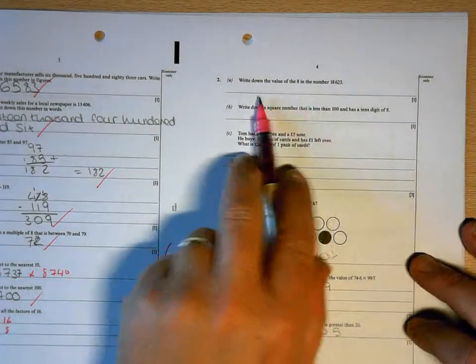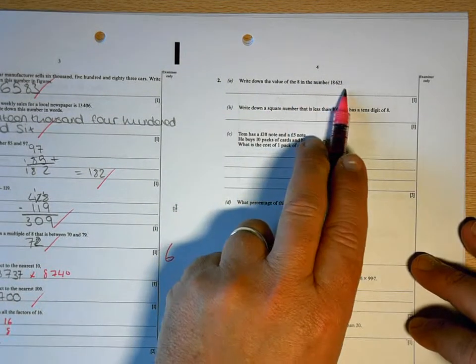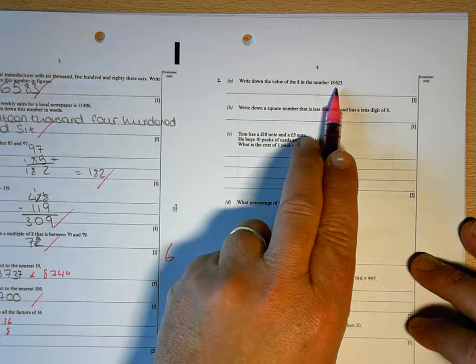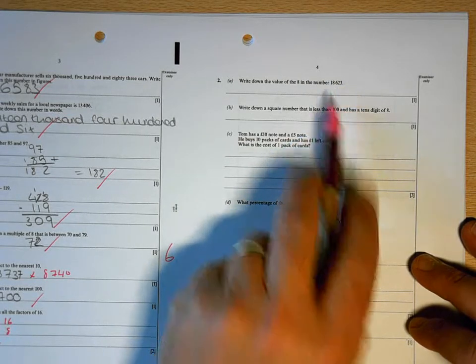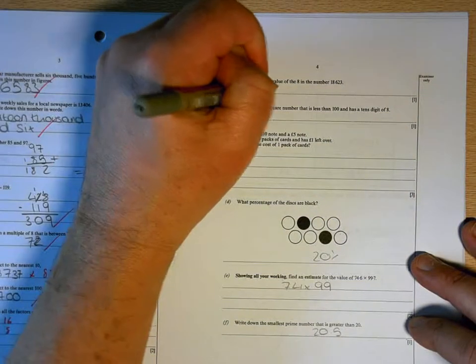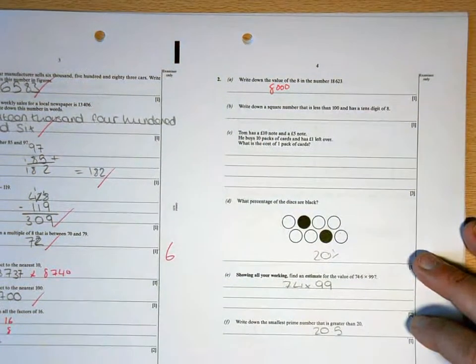This question, the value of 8, again, units, tens, hundreds, thousands. So the 8 is in the thousands column, so its value is 8,000.